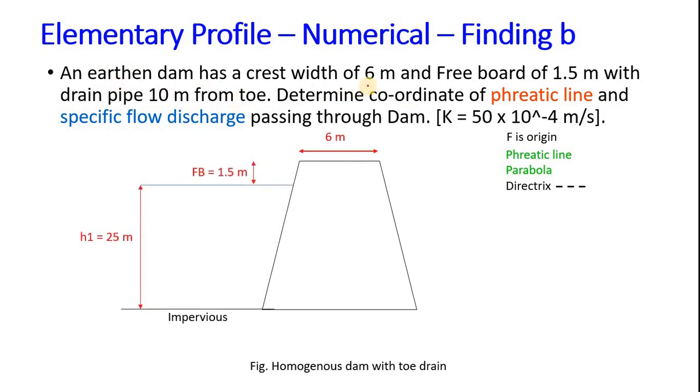Now as per the given question, 6 meters here is the crest width, freeboard is 1.5 meters, and the height of water is assumed to be at 25 meters from the base. This is the water level. Now suppose the slope on the upstream side is 1 is to 3, and slope on the downstream is 1 is to 2.